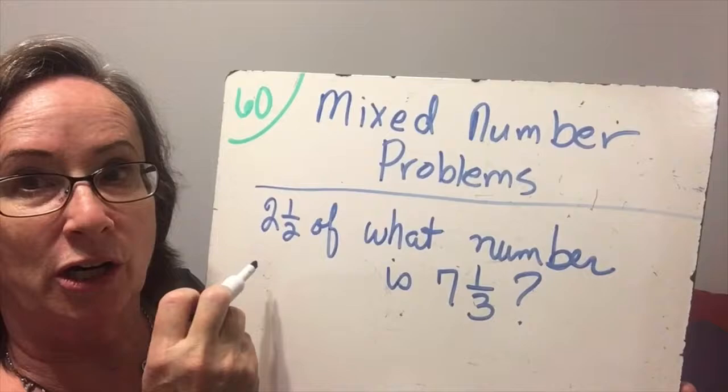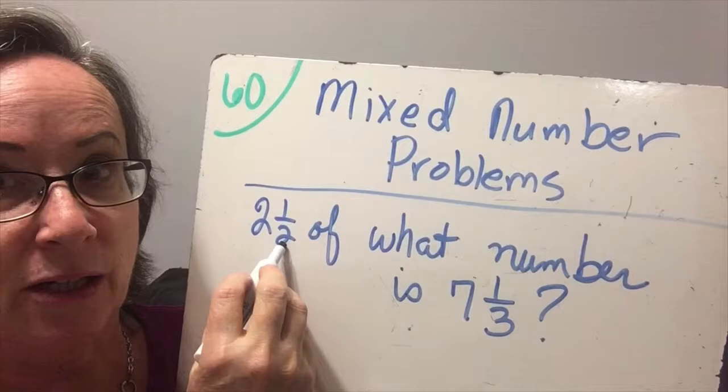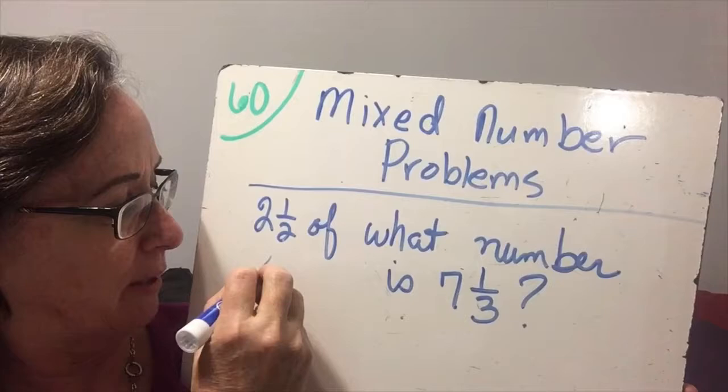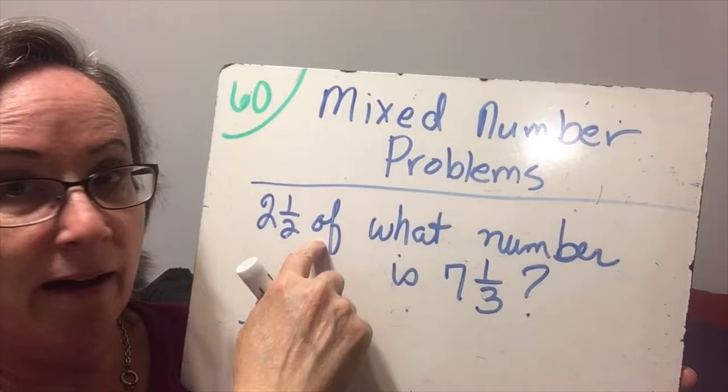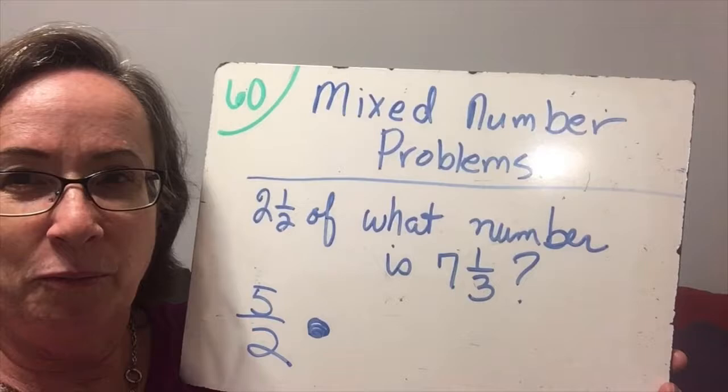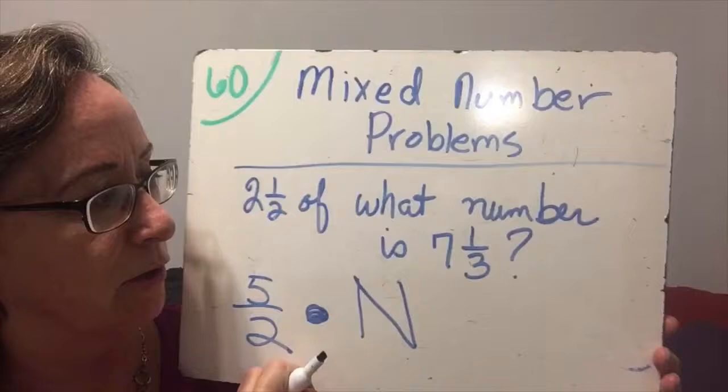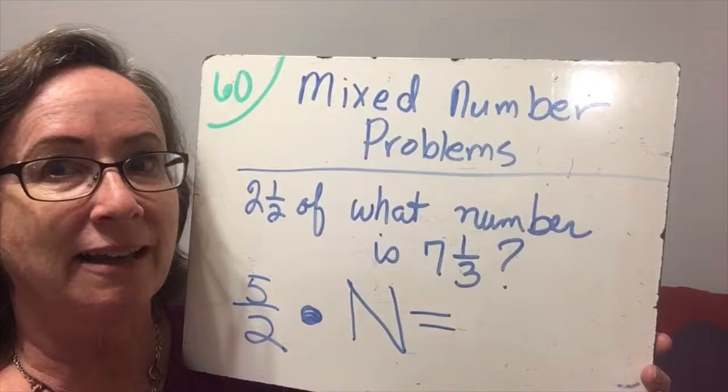To turn two and a half into an improper fraction, we multiply two times the two in the denominator — we get four, plus one is five halves. So we have five halves. 'Of' always means times — times what number? We can use n for that, a good variable for 'what number.' 'Is' is an equal sign.